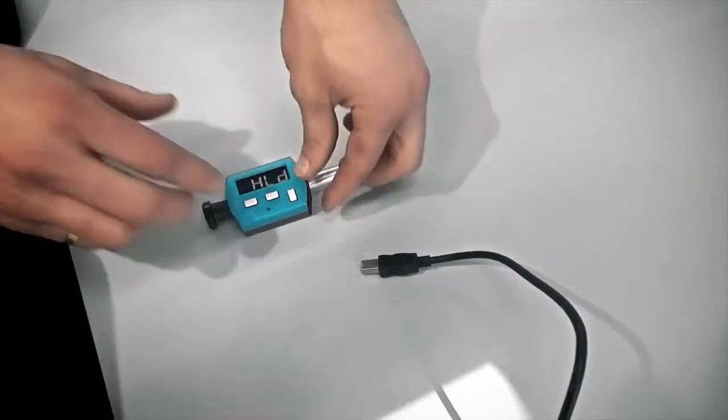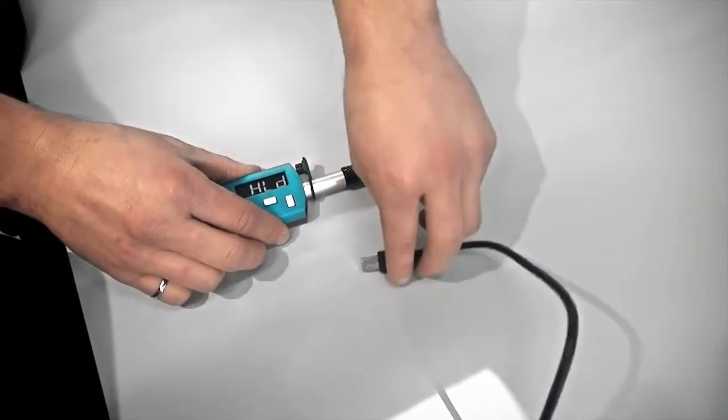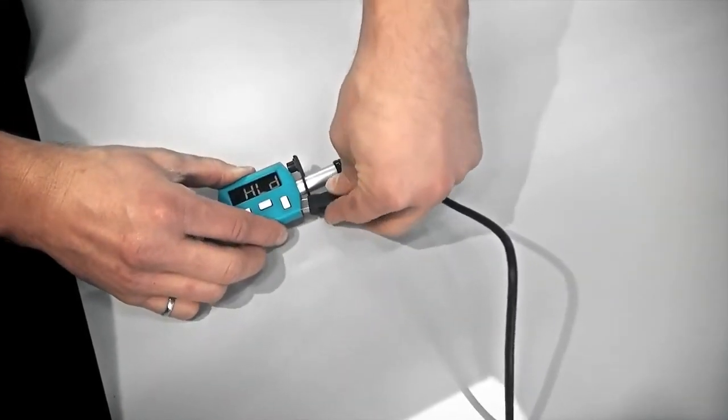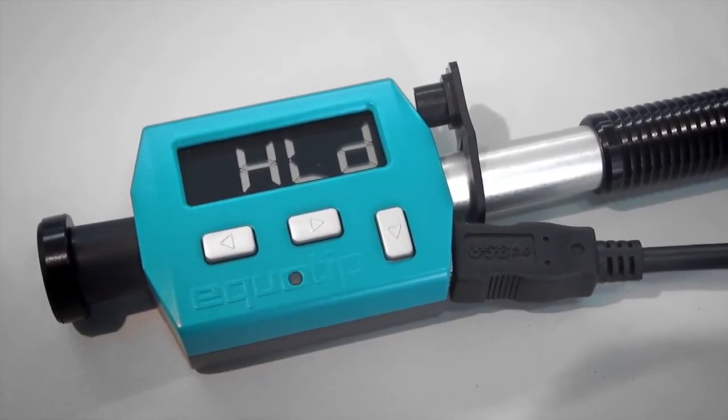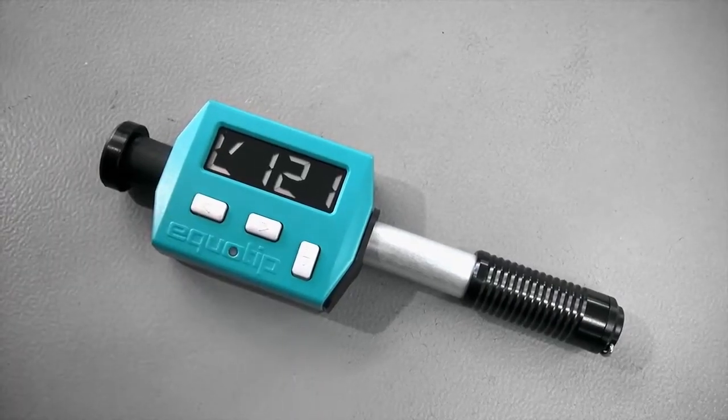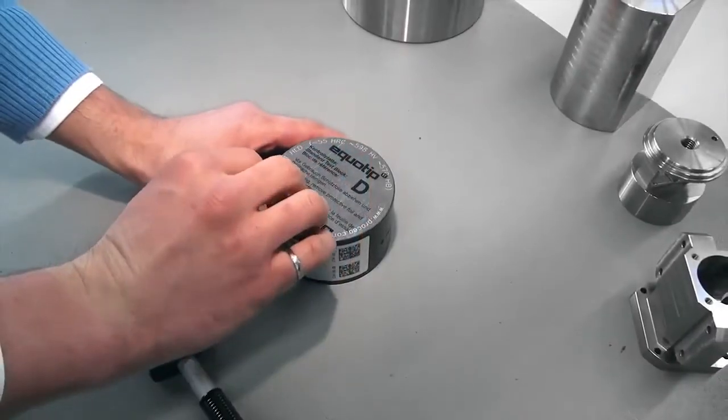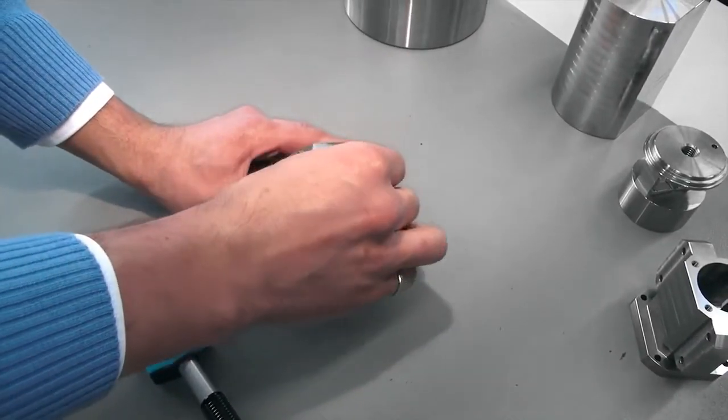Before using the instrument, please make sure the battery is charged. When fully loaded you can make at least 20,000 measurements. To turn the instrument on, press any key. When you use the instrument for the first time, the Lieb is the default hardness scale.